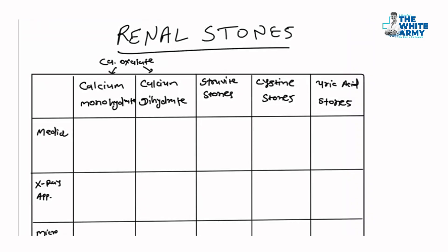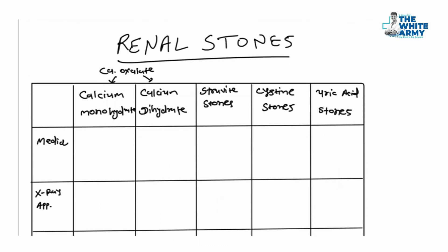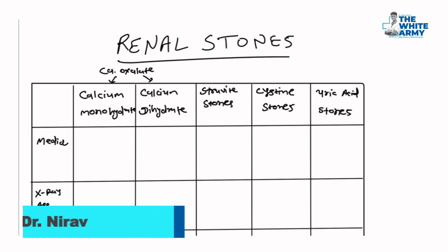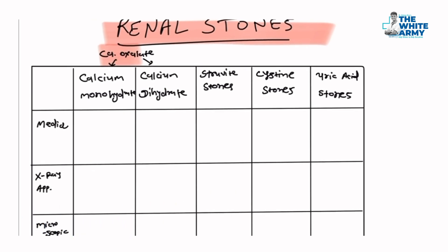Hello everyone, welcome back. Today's lecture is about renal stones, because in any exam you will get one to two questions on renal stones. Let's understand using one table within five minutes. The most common types of renal stones are calcium oxalate — two types: calcium monohydrate and calcium dihydrate.